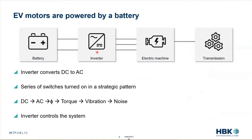By turning a switch on and off, we create an AC voltage. That AC voltage comes into the electric motor, gets filtered into an AC current, and then into AC magnetics — giving us a sinusoidal magnet. Anything happening in that inverter becomes a magnet. That magnet in the machine is then transferred into torque and speed, and this torque and speed create noise and vibration.